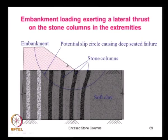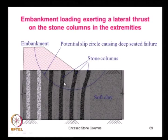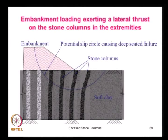The advantage of encased stone columns is also seen under lateral loading. When a high embankment is constructed on soft clay, a slip surface failure typically develops. Ordinary stone columns get sheared because there is no confinement on the stones. In encased stone columns, much higher lateral resistance is developed — unless the geogrid or geotextile is sheared through, failure of the column will not happen. This is the additional lateral load capacity that encased stone columns can provide.